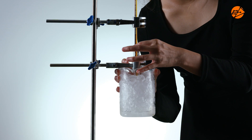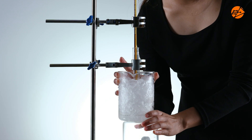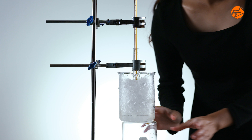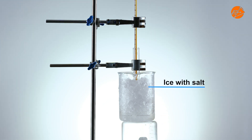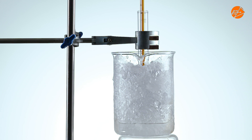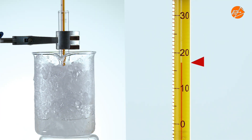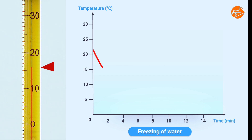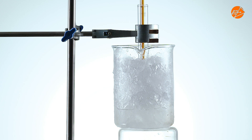To freeze the water in the test tube, let's surround the test tube with a beaker of ice and salt. The water in the test tube is losing heat to the beaker of ice. The temperature of the water in the test tube is dropping below 20 degrees Celsius. Let's look at the graph.